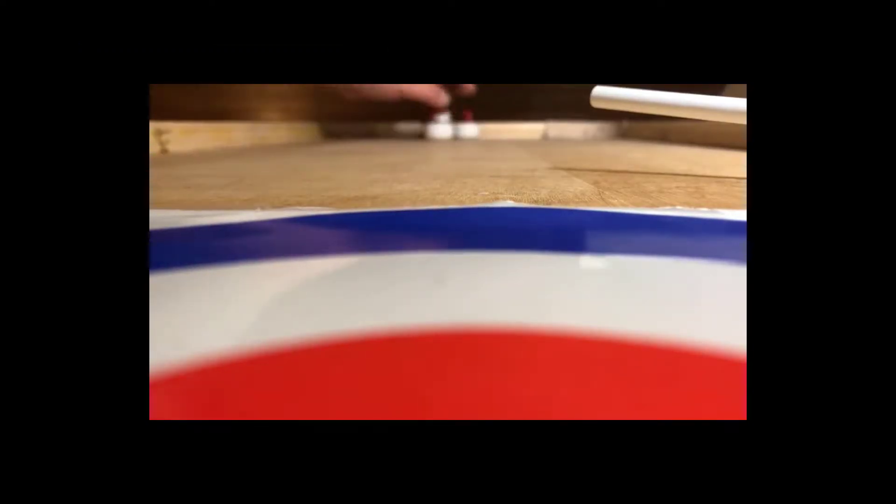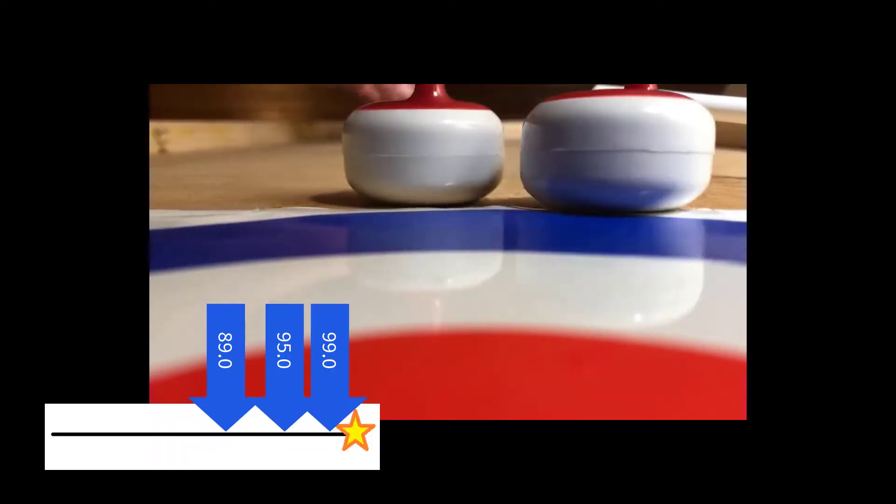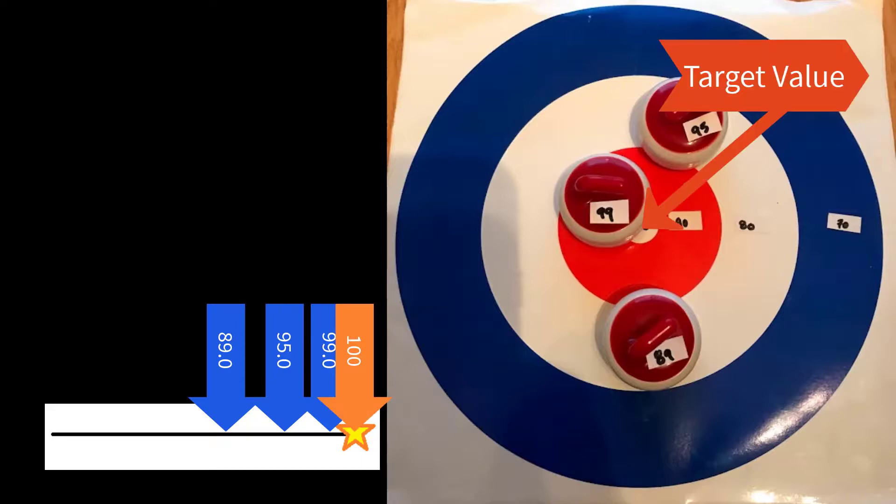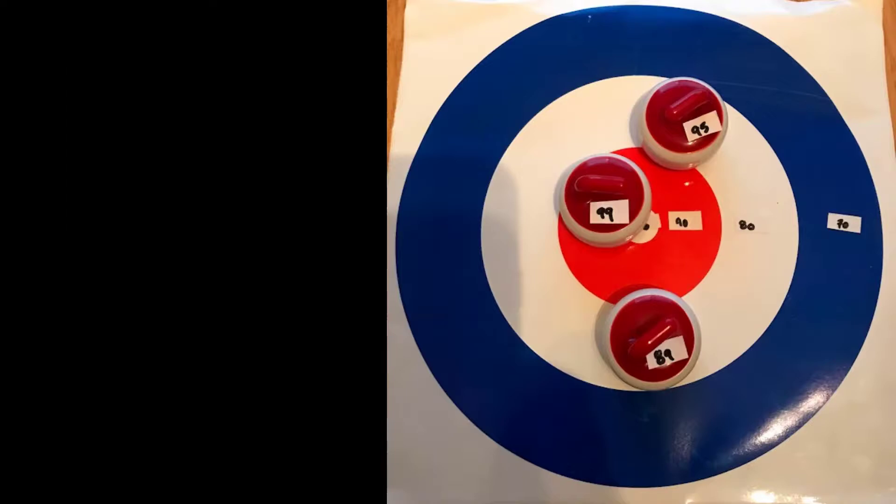Suppose again that our target value is 100. Measurements yield 99, 89, and 95. These measurements are not near to one another, but they are closer to the target value than the previous example. In this example, we can say that our measurements have higher accuracy but lower precision than in the previous example.